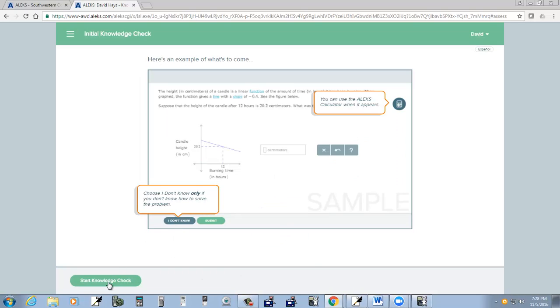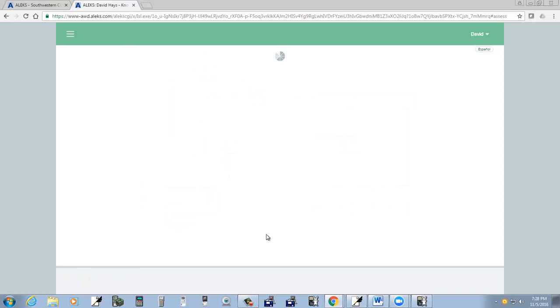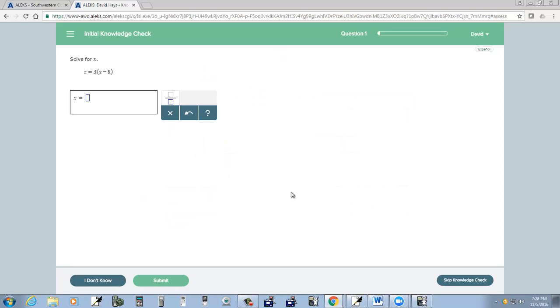And so I click start knowledge check. And it says solve for z. So you go through and you solve this. You don't know. You click I don't know. You click submit.